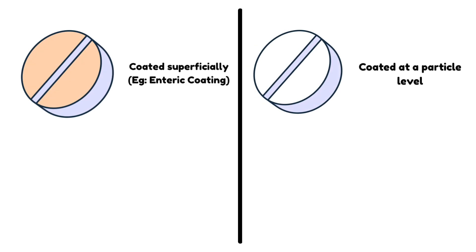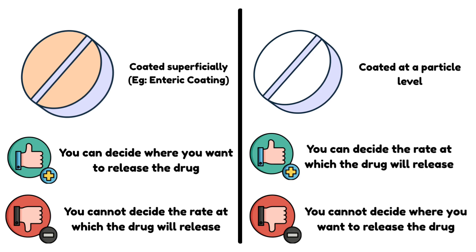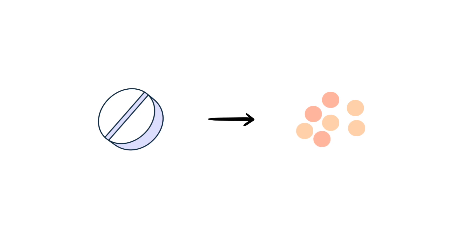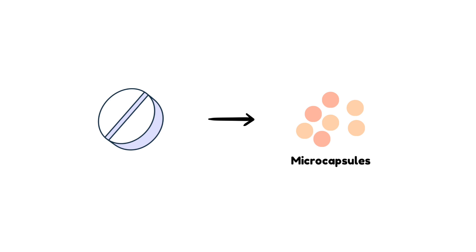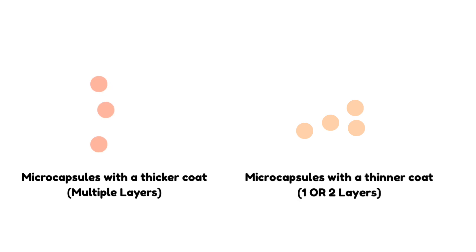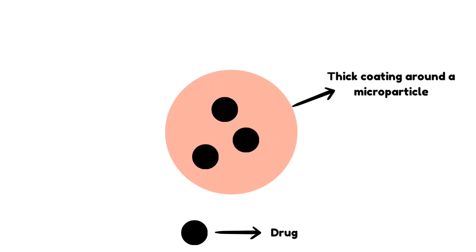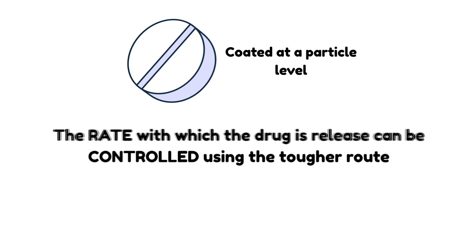You're going to have a massive difference in the release profile of these two formulations. In the first case, you were able to decide where you wanted to release your drug, but you weren't able to control how fast it would release once it spilled out. In the second case, you were able to do exactly that. Once the tablet breaks down inside the GI tract — in the stomach, intestines, or wherever it is designed to release — it will break down into microcapsules. Some microcapsules will have a thicker coat and release the drug slower, while others with a thinner coat will release the drug faster. This is how we can control the rate of drug release by taking the tougher route.